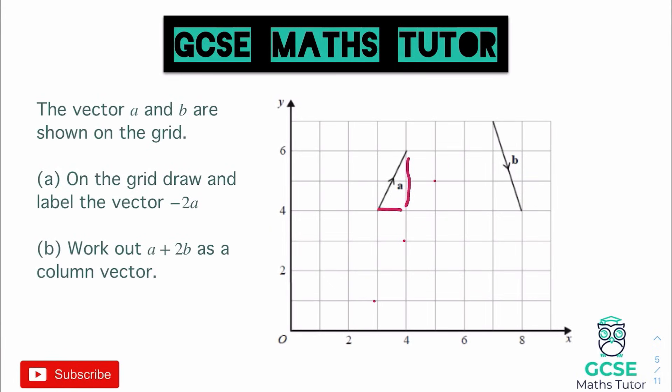That line would be the vector 2A — double the distance of A following the same pattern of across 1, up 2. The fact that we're doing minus 2A means we point the arrow in the opposite direction, and we label that as the vector minus 2A.